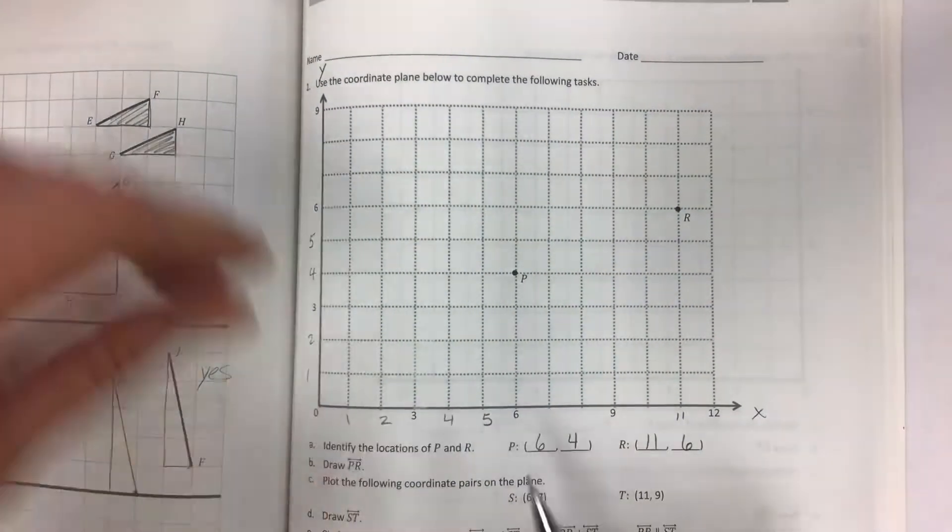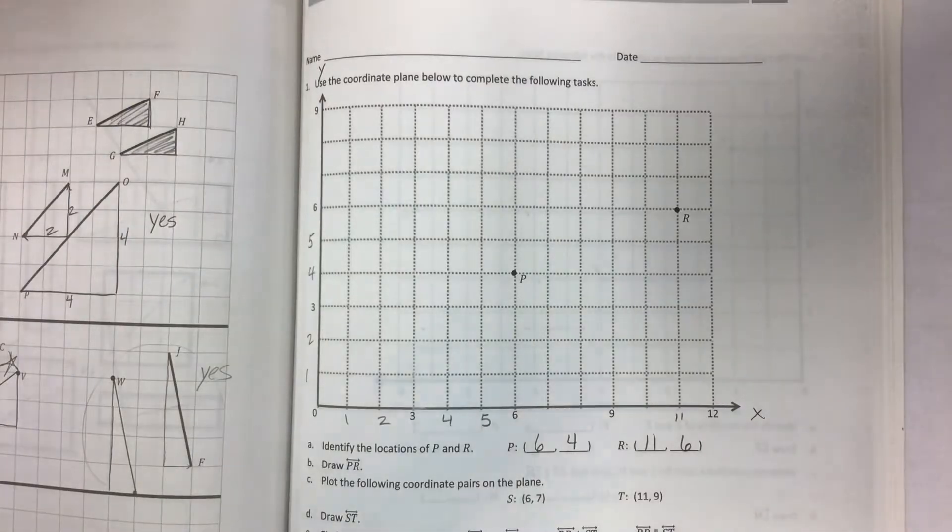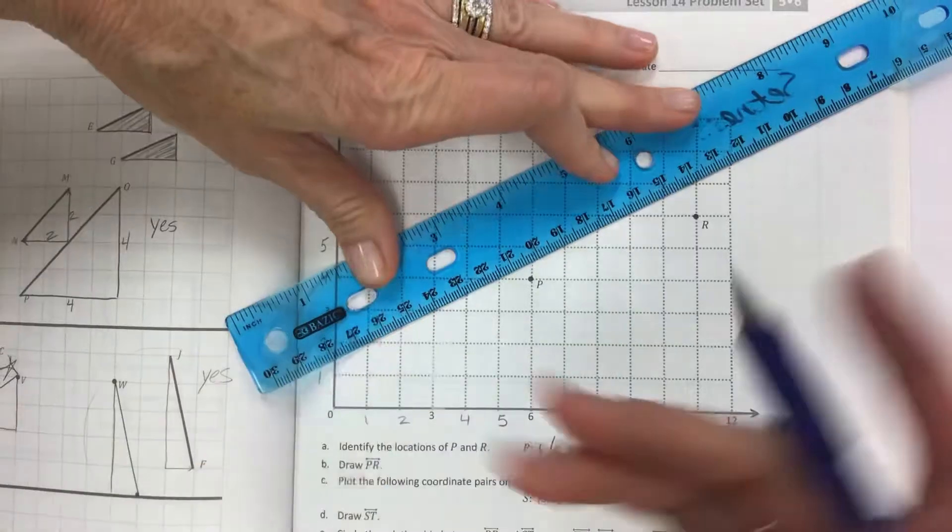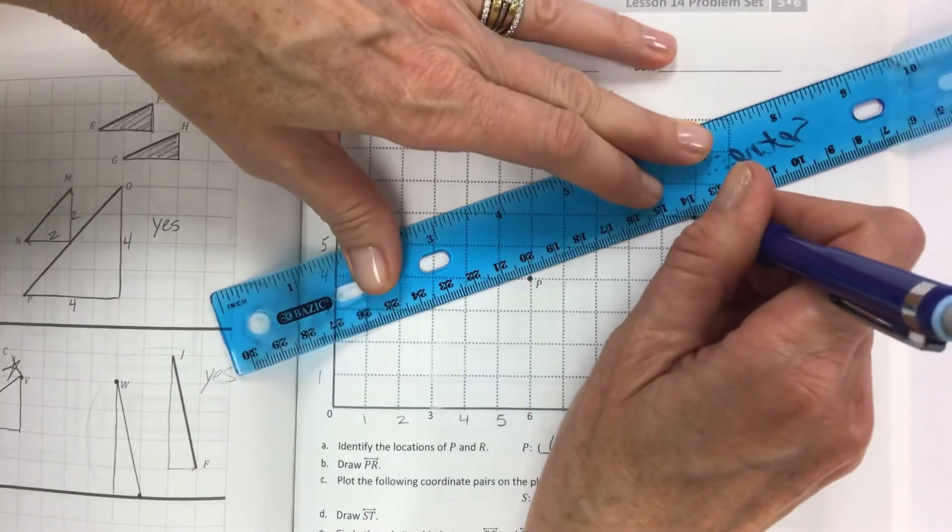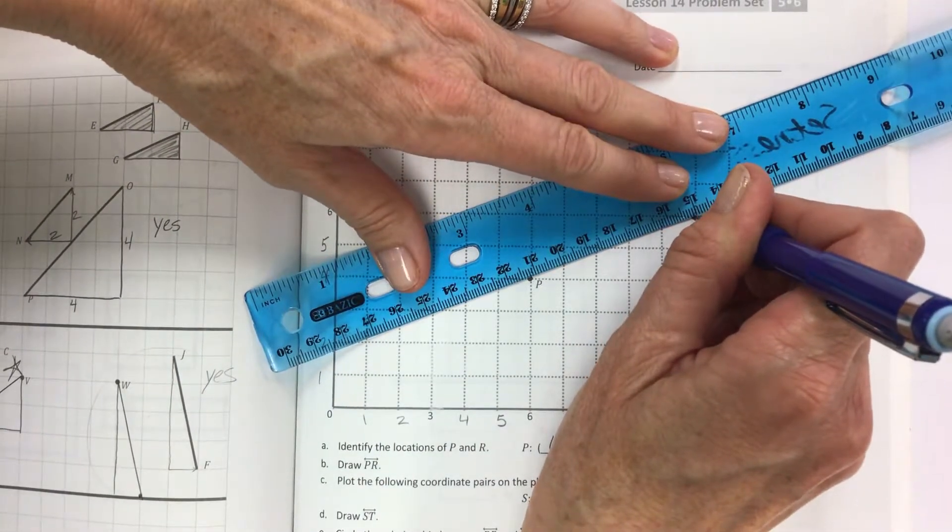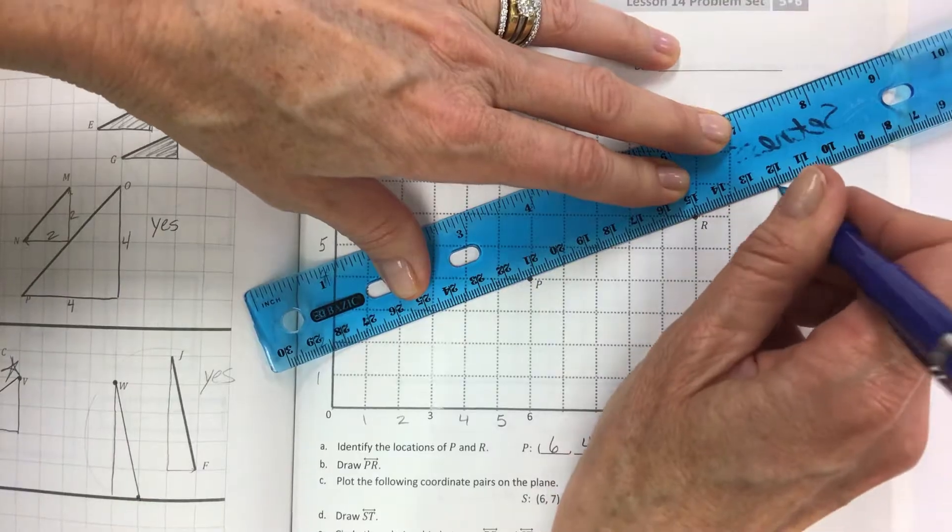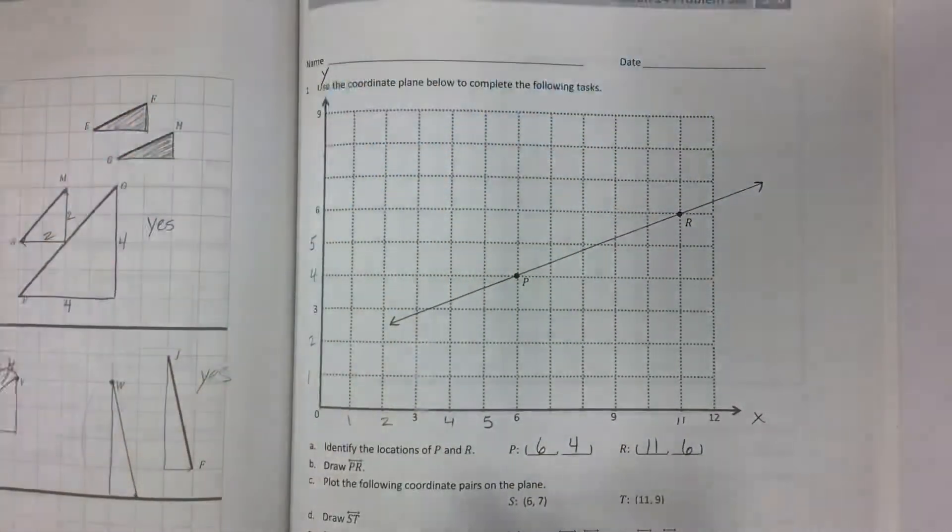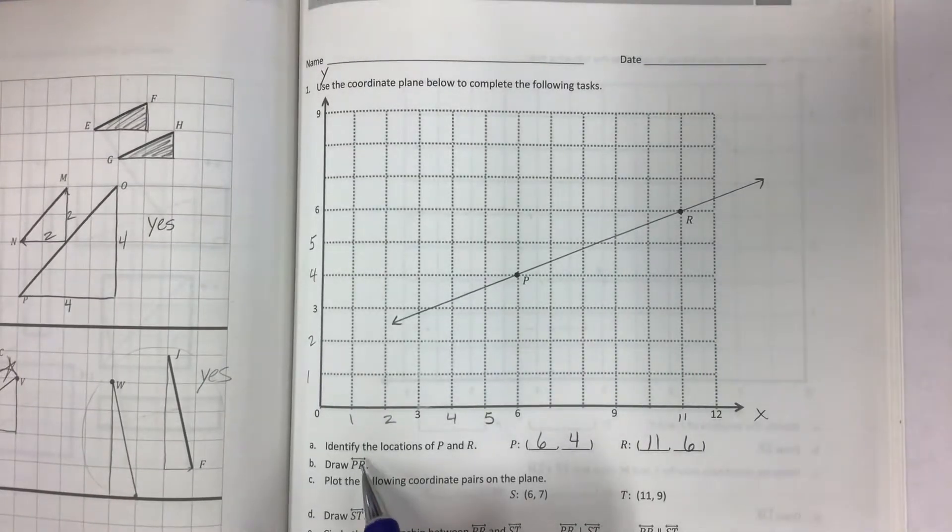Now we're going to draw line PR. PR public relations. So we're going to connect these two points and it's a line so you can go past it. You don't have to do a line segment where you stop short. Look for the little line symbol there.